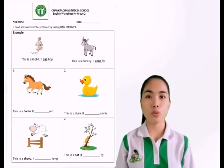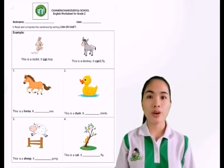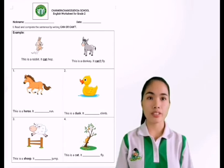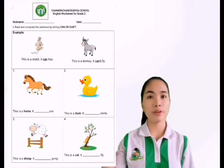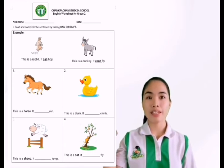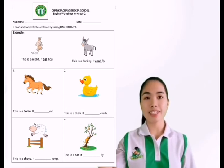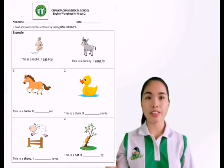Let's proceed to your worksheet. For the first page, you are going to read the sentence and then complete it by writing can or can't. For example: this is a rabbit — it can hop. Next: this is a donkey — it cannot fly, or it can't fly. That is the first page of your worksheet — read the sentence and complete by writing can or can't.